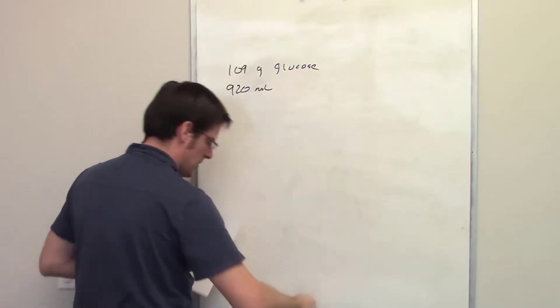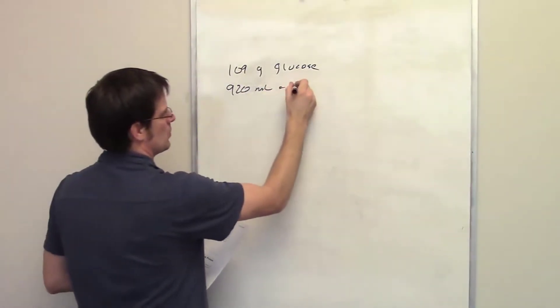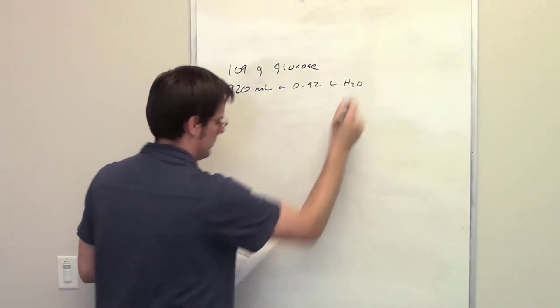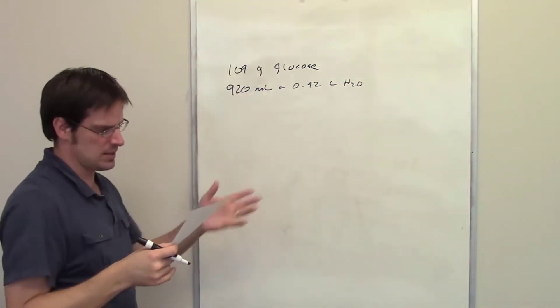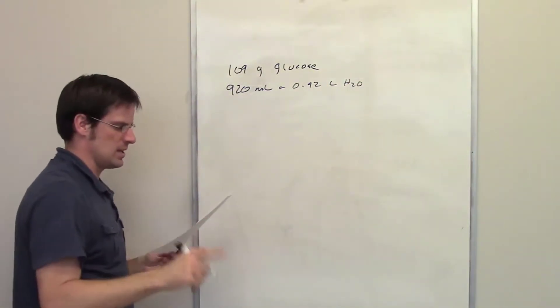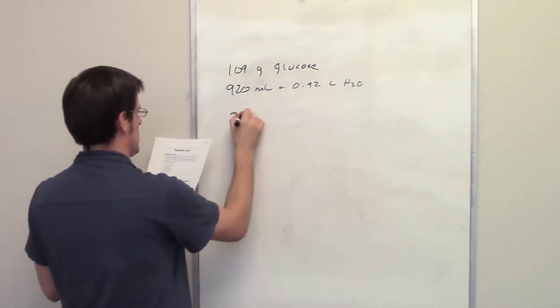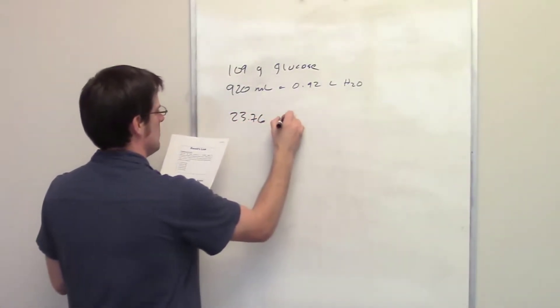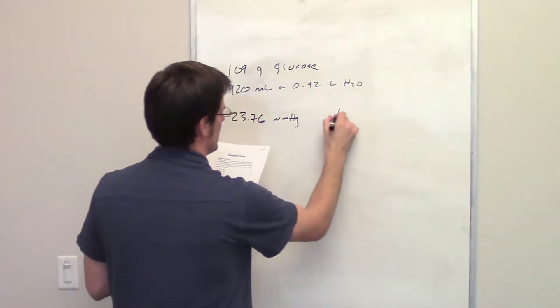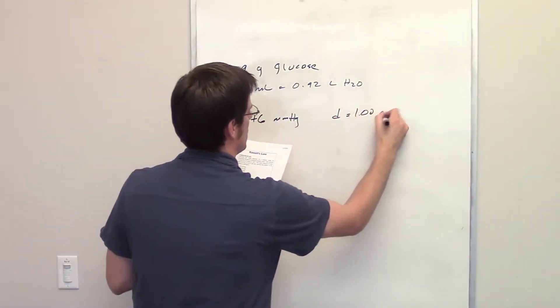I'm going to change that directly to 0.92 liters of water. It tells us the temperature of 25 degrees Celsius. It also tells us that the vapor pressure of pure water is 23.76 millimeters of mercury. Then we assume that the density is equal to 1 gram per milliliter.